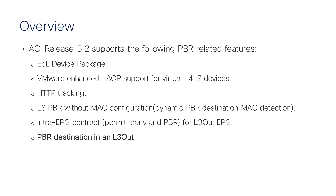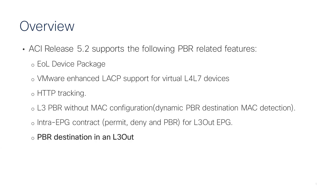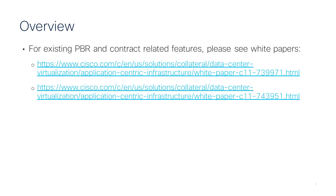ACI Release 5.2 has several service graph and PBR-related features. In this presentation, I'm going to talk about PBR destination in an L3 out. For other new features and existing features, please check other documents available on cisco.com.